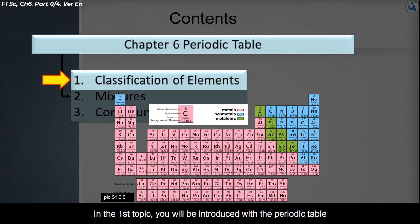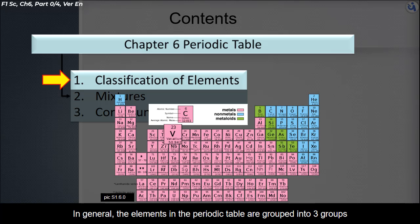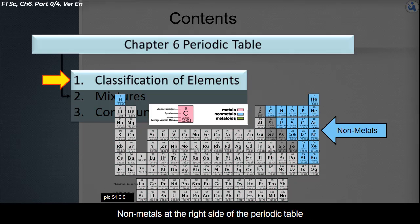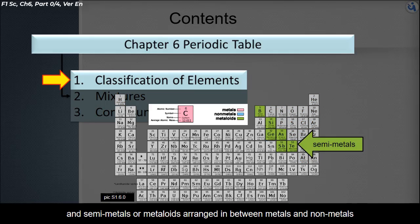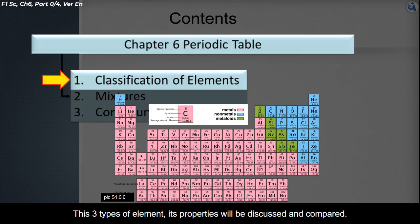In the first topic, you will be introduced with the periodic table, where we will discuss how the elements are arranged. In general, the elements in the periodic table are grouped into three groups: metals at the left side of the periodic table, nonmetals at the right side of the periodic table, and semi-metals or metalloids arranged in between metals and nonmetals. These three types of elements and their properties will be discussed and compared.